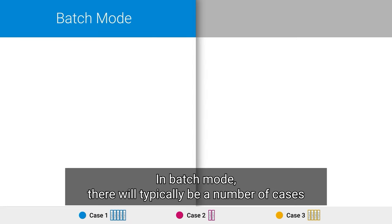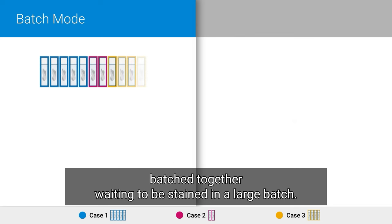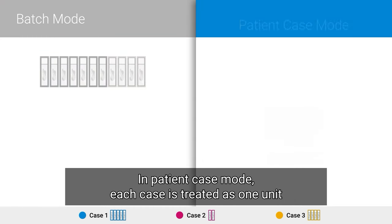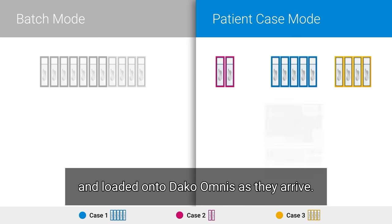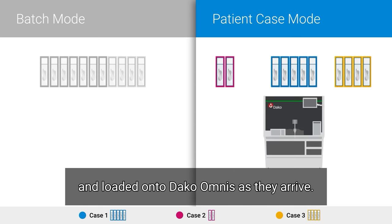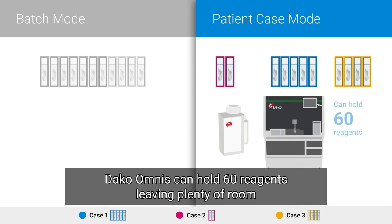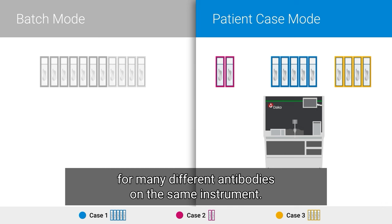In batch mode, there will typically be a number of cases batched together waiting to be stained in a large batch. In patient case mode, each case is treated as one unit and loaded onto DACO-OMNIS as they arrive. DACO-OMNIS can hold 60 reagents, leaving plenty of room for many different antibodies on the same instrument.